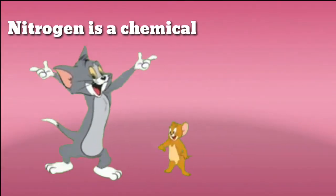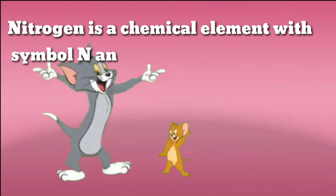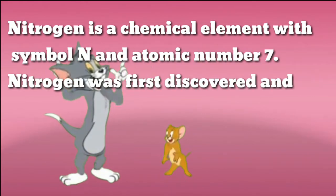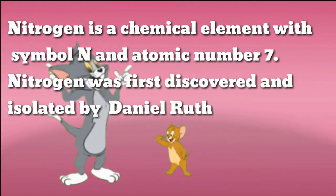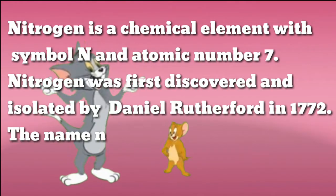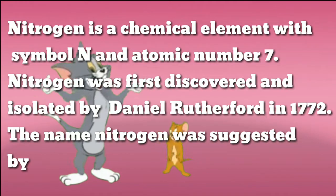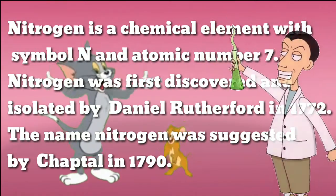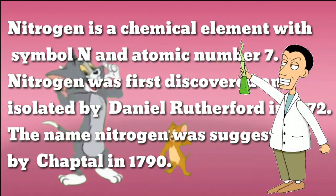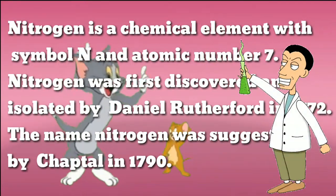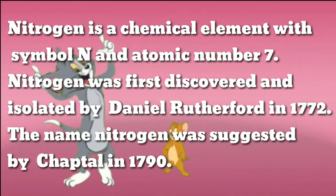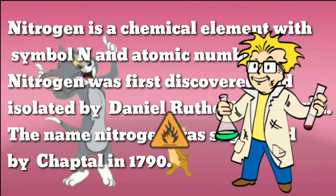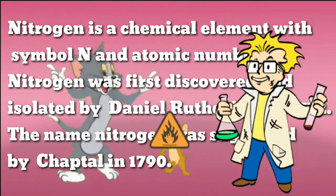Nitrogen is a chemical element with symbol N and atomic number 7. Nitrogen was first discovered and isolated by Daniel Rutherford in 1772. The name nitrogen was suggested by Chaptal in 1790.